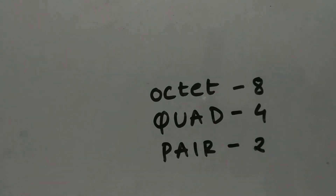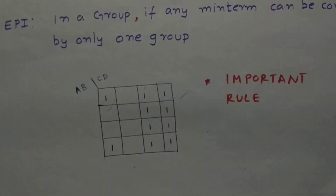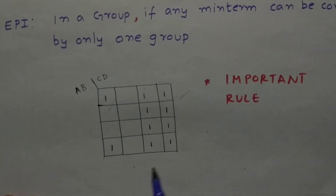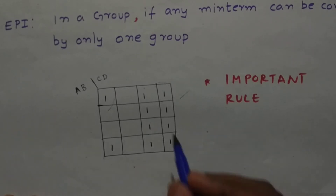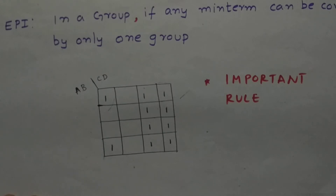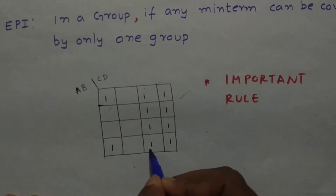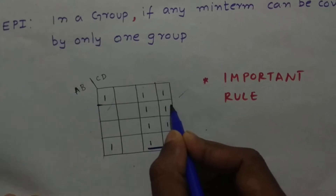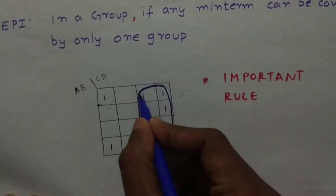Now we know how to group, but there's an important rule in grouping. Let us consider a small example. I have taken certain number of ones in a four-bit K-map. So how are we going to group it? First, we need to consider the largest group combination — the largest group which we can form among them.